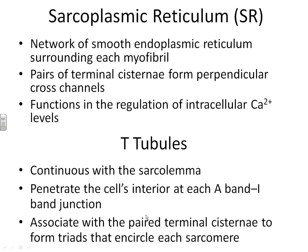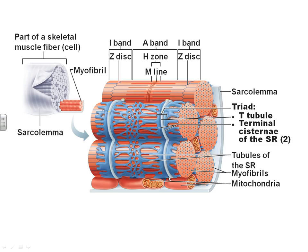Now, if we look at the structure of the T-tubules and the sarcoplasmic reticulum that we were talking about earlier, you can see that this is inside of a muscle fiber. Here are all the mitochondria. Each one of these barrel-looking structures is a myofibril composed of sarcomeres. The blue is the sarcoplasmic reticulum - it actually wraps around each of the myofibrils. This light blue area here represents where the actual invagination of the sarcolemma, the plasma membrane, invaginates and goes into the muscle fiber, forming the T-tubules.